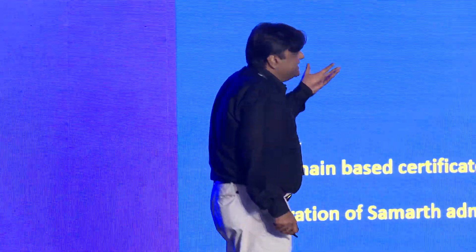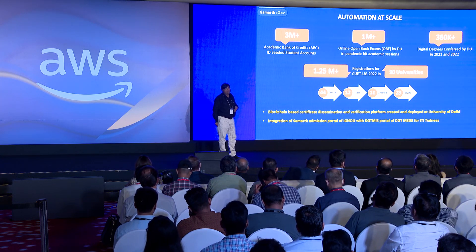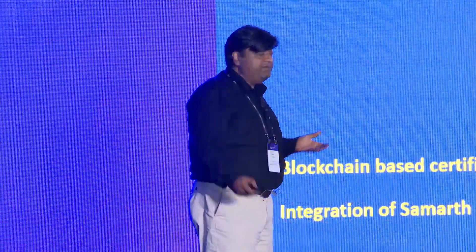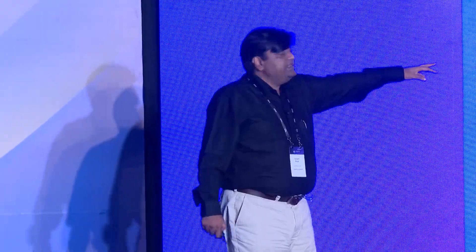Three million academic bank of credits have been achieved with the help of DigiLocker. We have conducted one million open-book examinations and distributed more than 360,000 digitally signed degrees with blockchain-enabled verification to students. For 90 universities, we have achieved 1.25 million registrations for the CUET undergraduate admission, which has just completed and for which the admission process will start very soon. Twenty-three private universities have already onboarded onto Samarth, which is very encouraging.